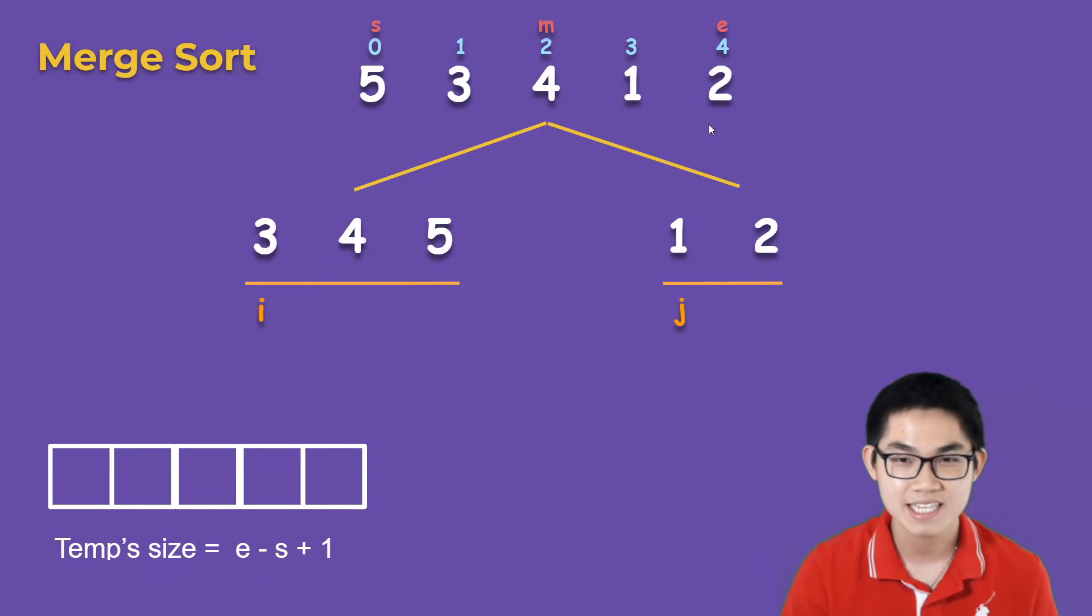Since we merge five numbers, we need to create a temporary array of size 5. But the official formula is e minus s plus 1. So e is currently at index 4, s is currently at index 0, so 4 minus 0 plus 1 will give you 5. Then we also put k at the beginning of the temporary array.